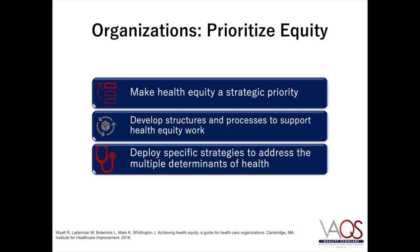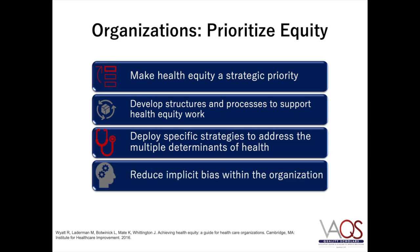Another strategy would be to deploy specific strategies to address the multiple determinants of health on which healthcare organizations can have a pretty direct impact. For instance, collecting and analyzing data on patient populations is helpful to incorporate multiple determinants of health and improve population outcomes. Another strategy to prioritize health equity is to reduce overall organizational bias by educating clinicians on implicit bias and increasing their awareness of tools to address biases.